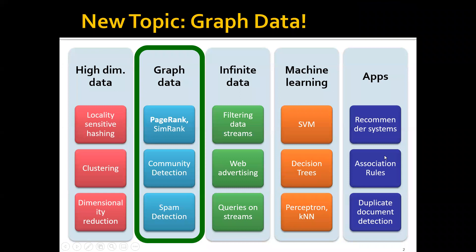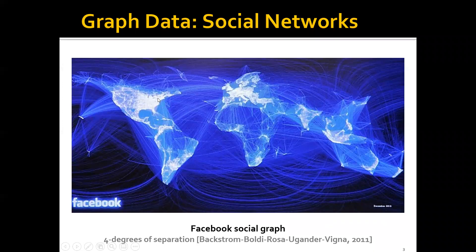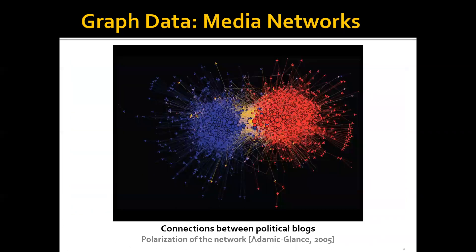This is actually the start of the new topic, which is the modeling of graph data. Examples of graph data include social networks, such as the Facebook social graph, where each node of the graph represents one specific user, and the edge between two nodes represents that there is a friendship or friend relation between these two users.